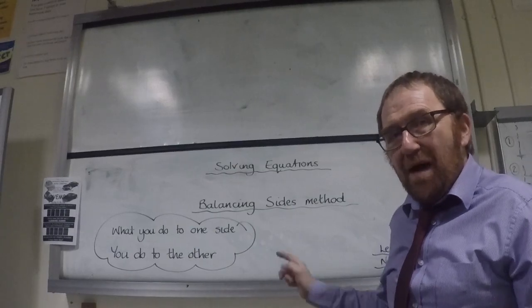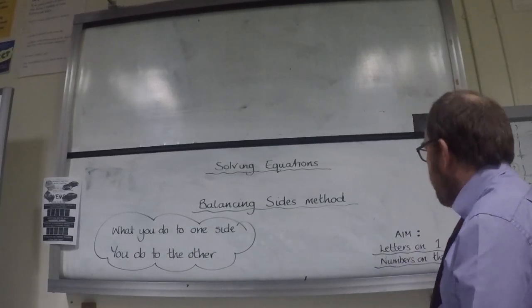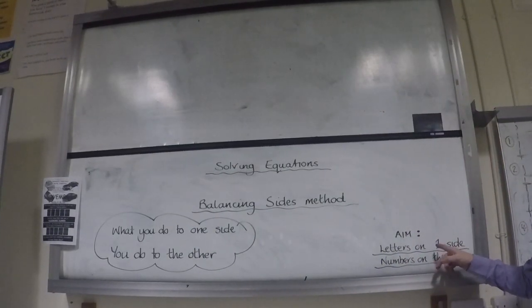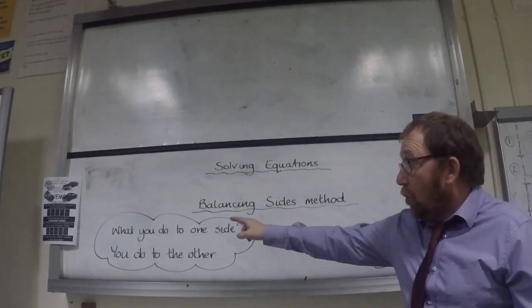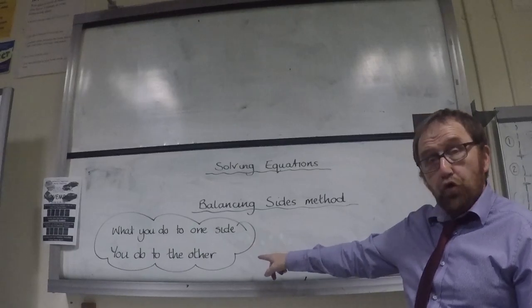Solving equations using the balance and sides method. The aim is to get letters on one side of the equation and numbers on the other. Using the rule: what you do to one side, you do to the other.